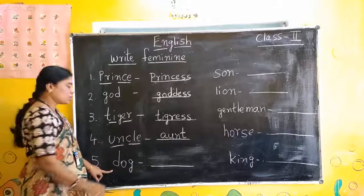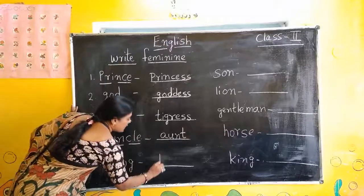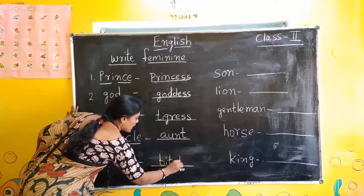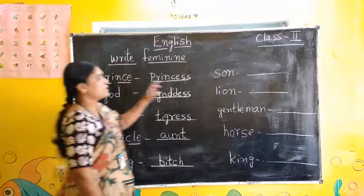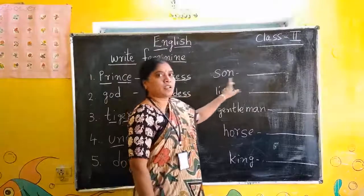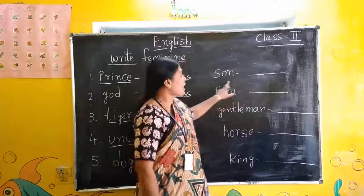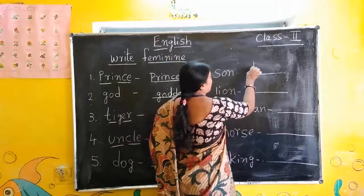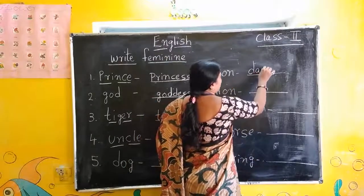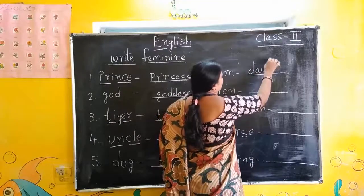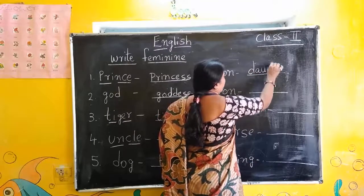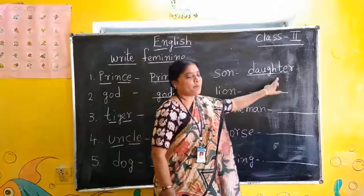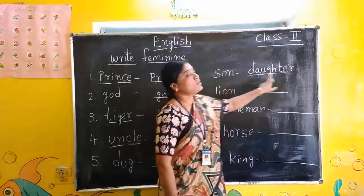Dog — here also the word totally changes. Bitch: B-I-T-C-H. Son — Daughter. S-O-N, Son. Daughter: D-A-U-G-H-T-E-R. Son — Daughter.